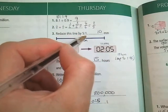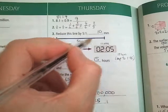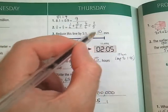Question number 3: reduce this line by 5 to 1. So the whole length of the line is 50 millimeters, so your new length is 10 millimeters.